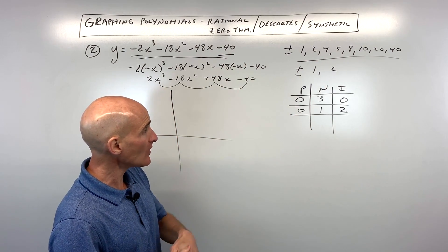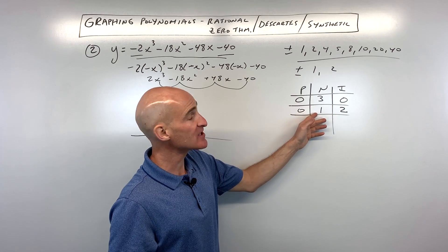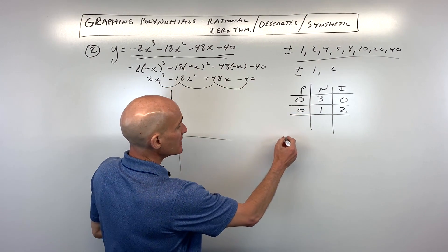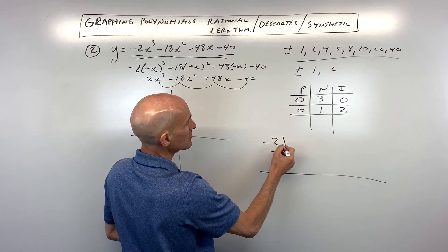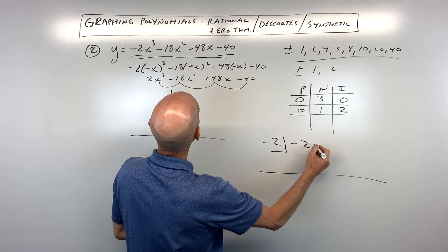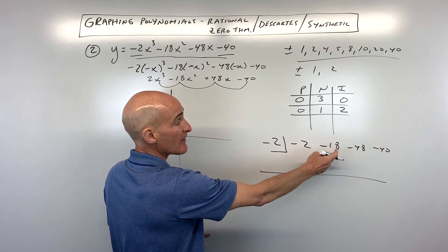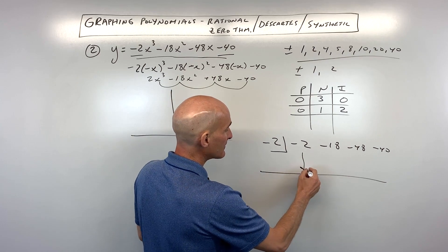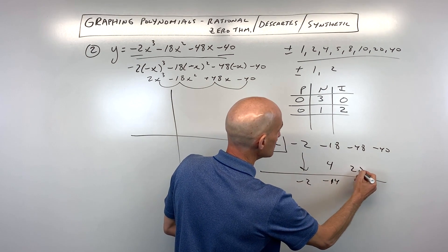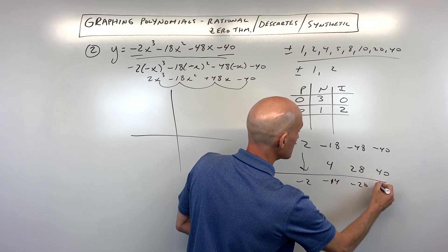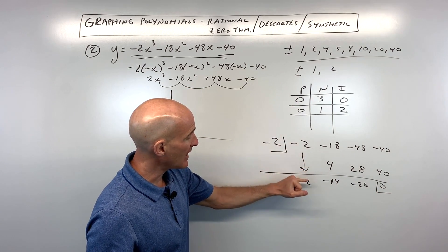We know there are no positives, so that already cuts our work down by half — we don't have to check any of the positive ones, just the negatives. So let's go ahead and do our synthetic division. Let's pick a negative value — let's go for negative 2. We take our coefficients: negative 2, negative 18, negative 48, and negative 40. We're not missing any terms, so no placeholder zeros needed. Drop down that first term, multiply on the diagonal, add straight down — repeat — multiply, add, multiply, add. It came out to zero, so negative 2 is a zero. It also brings us down from x cubed to x squared.